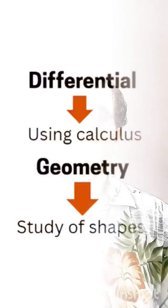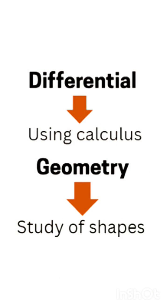The subject differential geometry consists of two words: 'differential,' which means we are using calculus because we do a lot of differentiation on a curved surface, and 'geometry,' which means it is definitely related to surfaces, shapes, and structures.